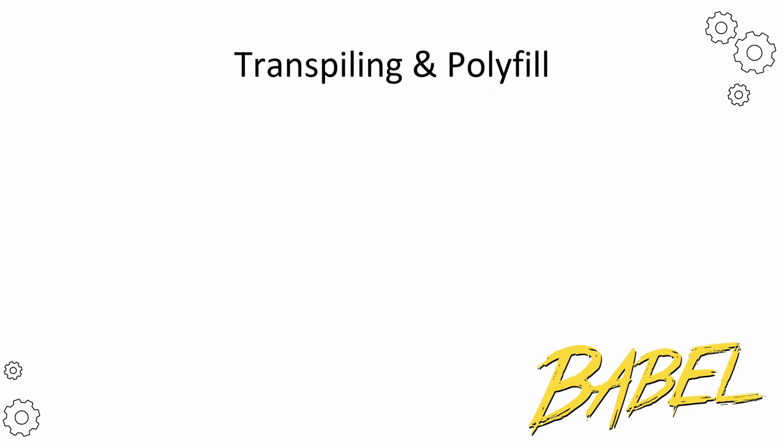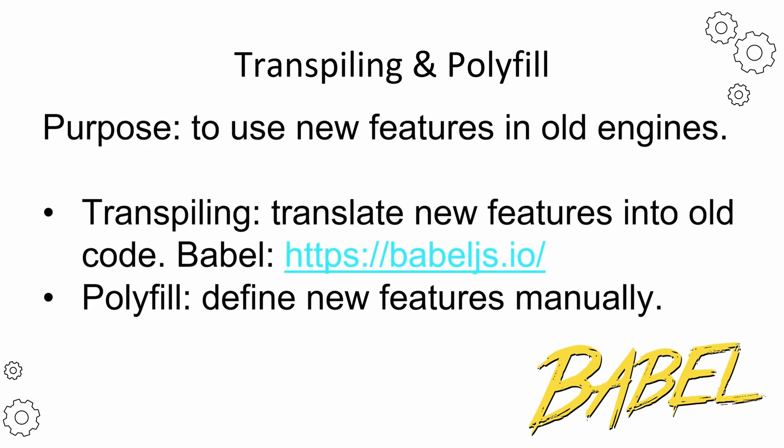There are millions of computers running different versions of browsers with different versions of JavaScript. Many people just don't upgrade their browser to the latest version. That means if you have some new features from the latest JavaScript in your program, these features might not work in some browsers. But we can't just wait until everyone's upgraded their browsers, because that's never going to happen. The solution to this problem is transpiling and polyfill.